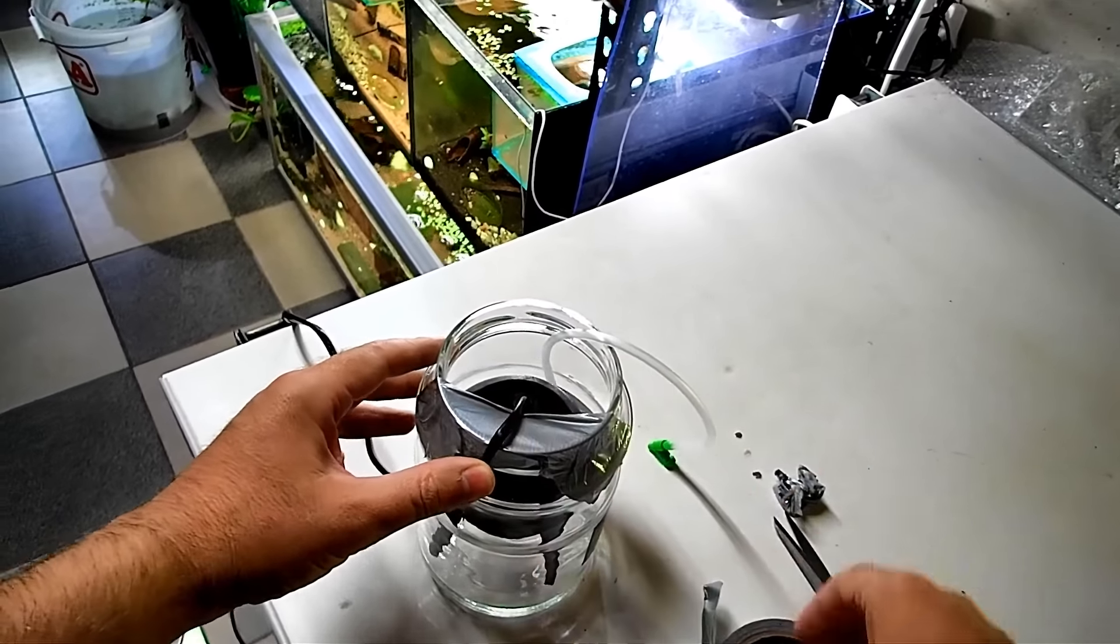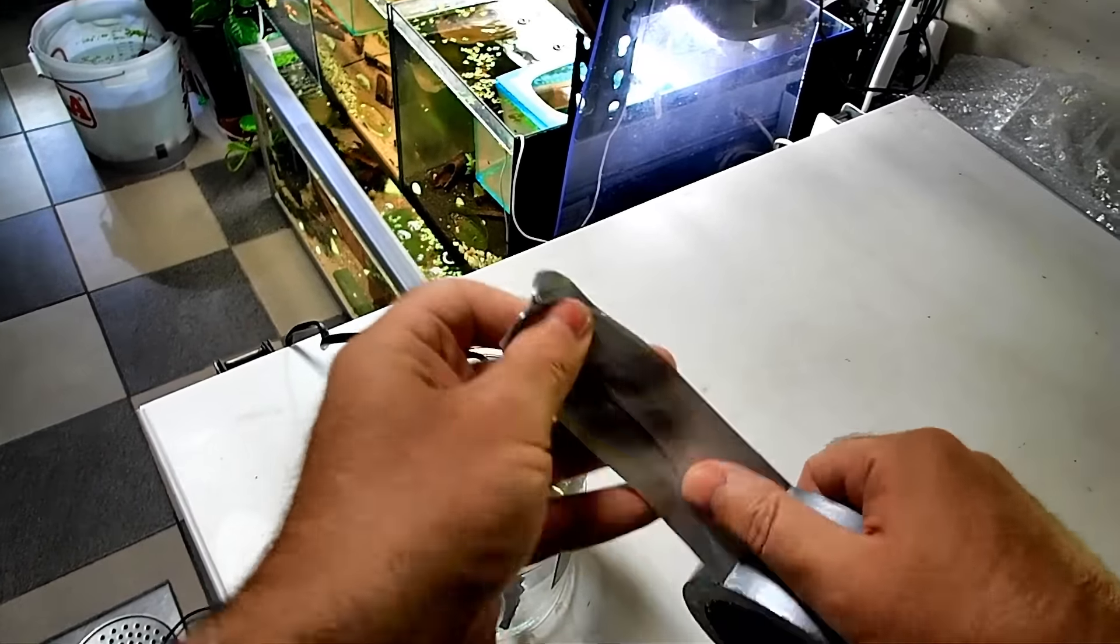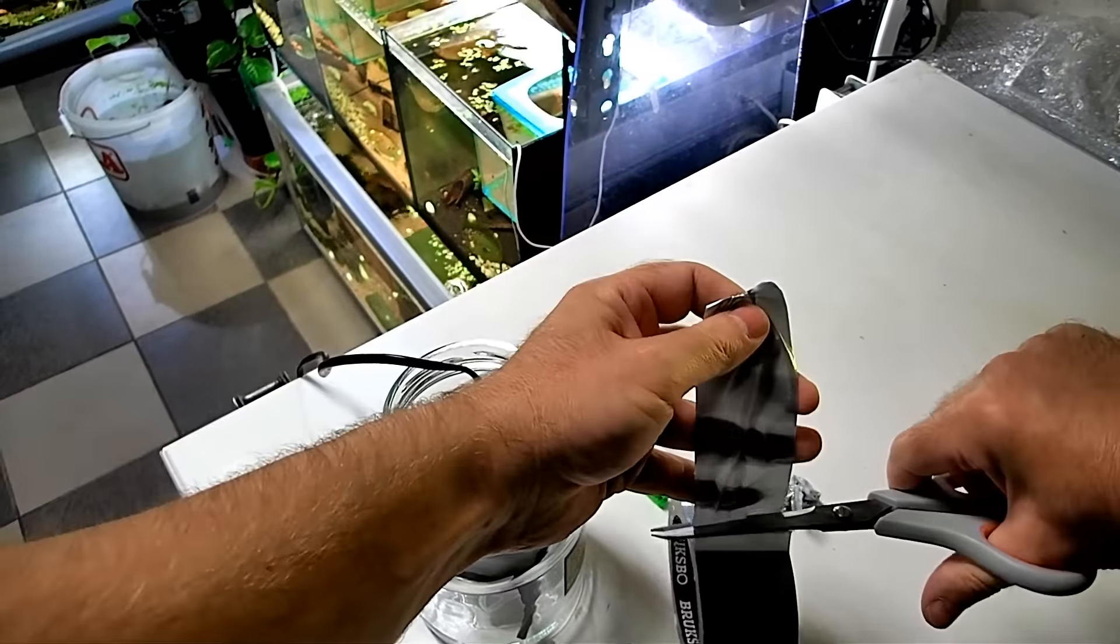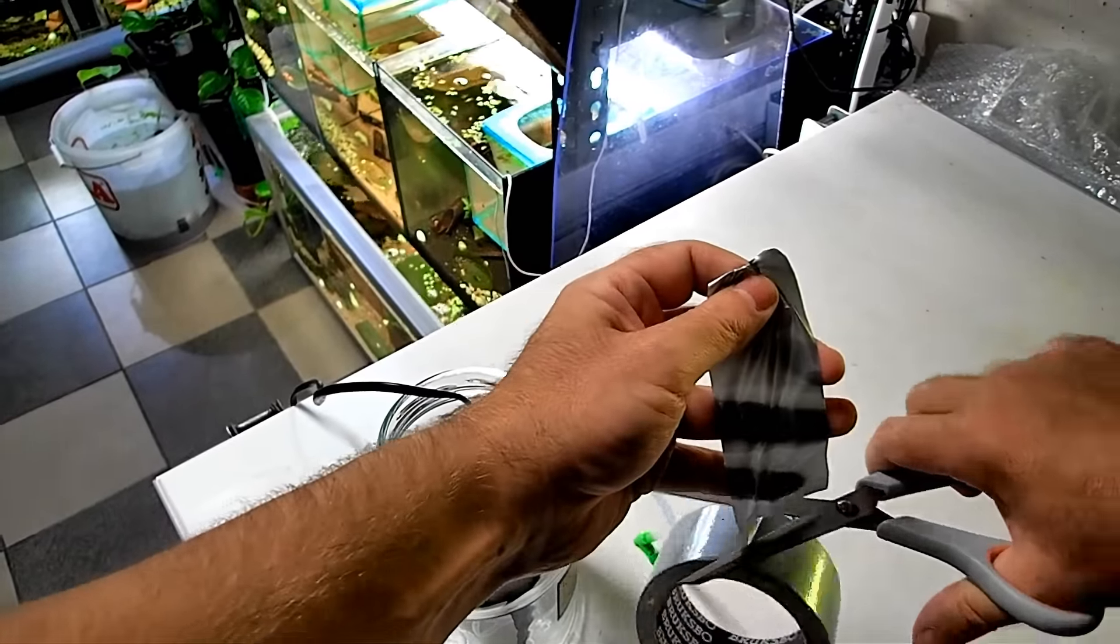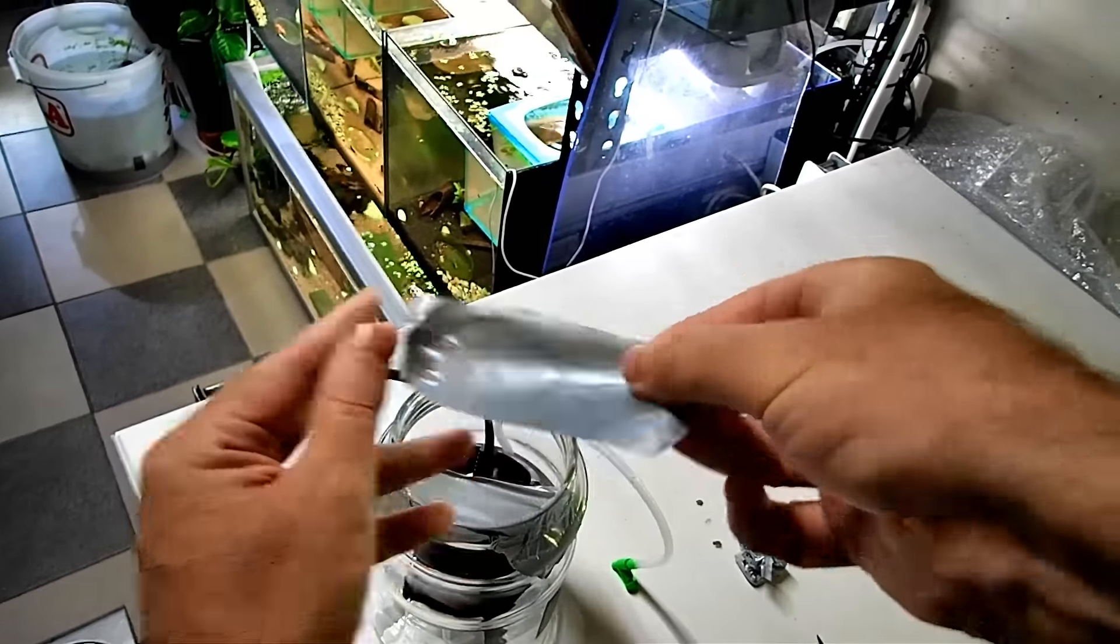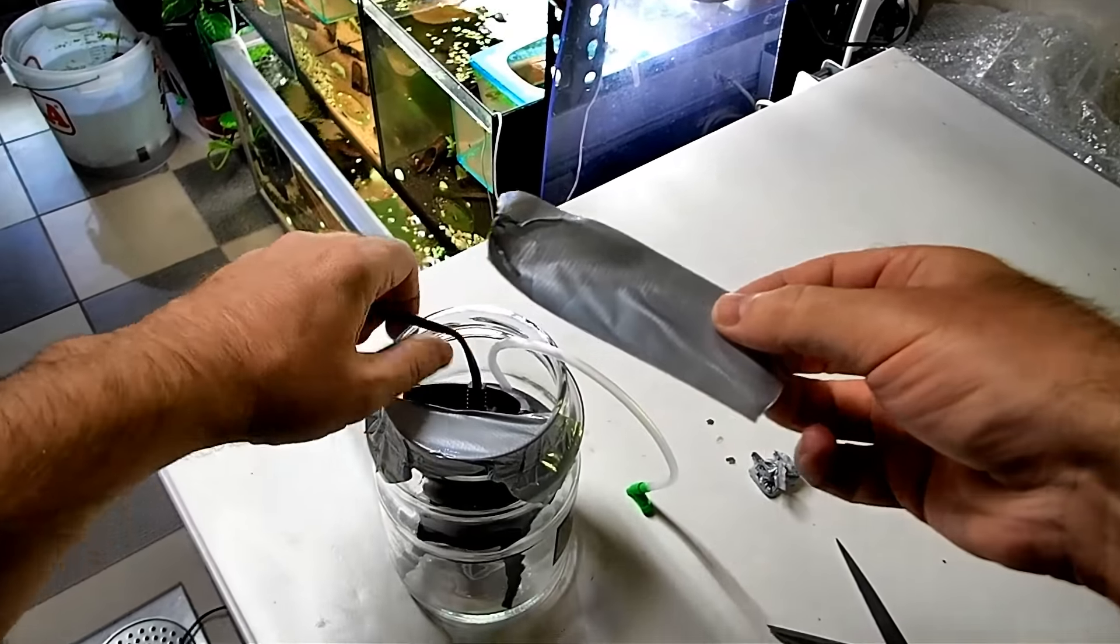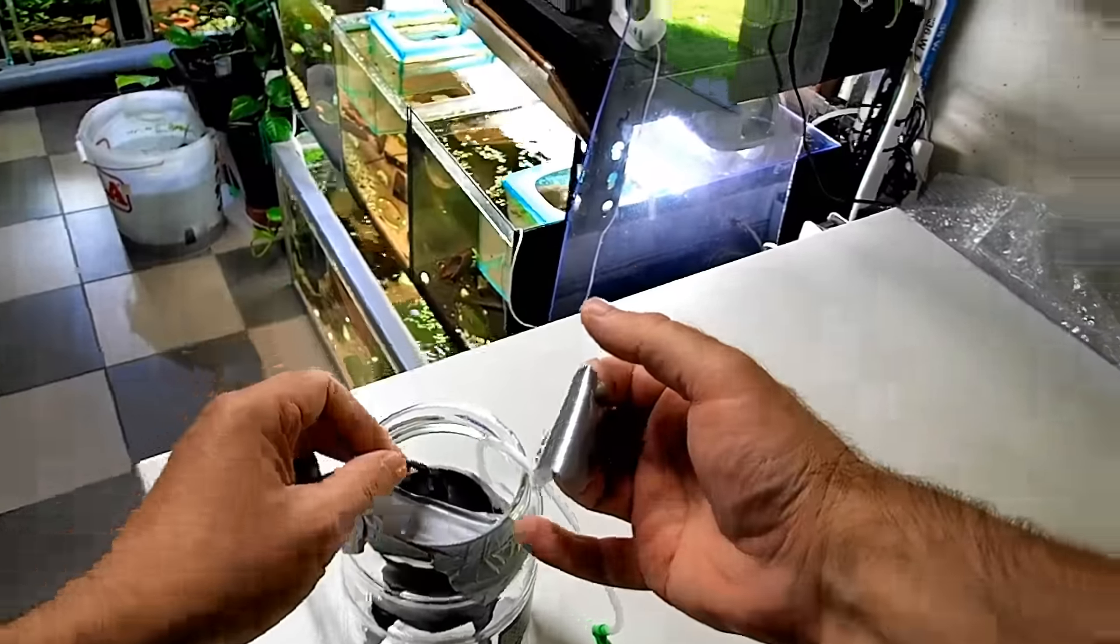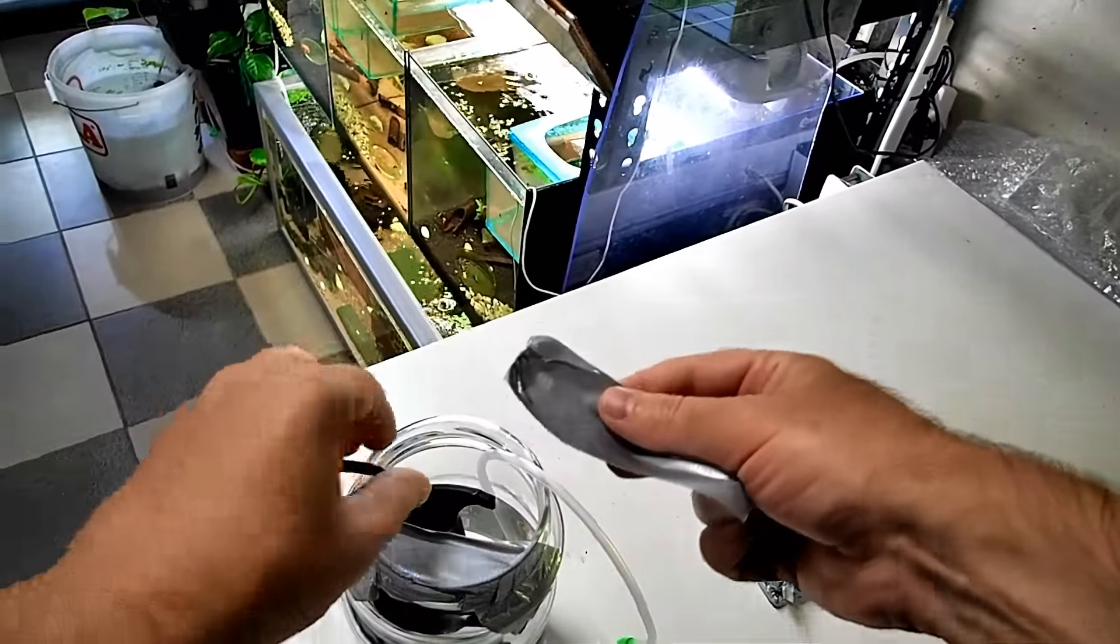And then we're gonna put another piece of tape across the top. Which shouldn't be too hard to do, seeing as it's strapped to my chest. That is so sticky. Right, so you want the pump to be suspended off the bottom and not touching the glass.